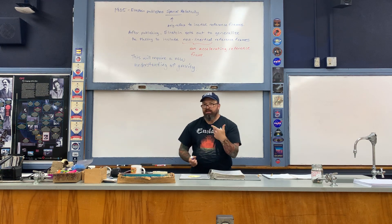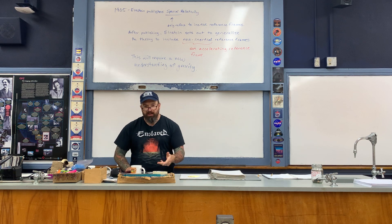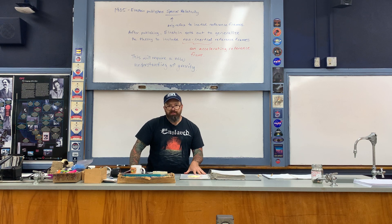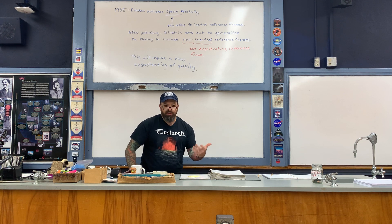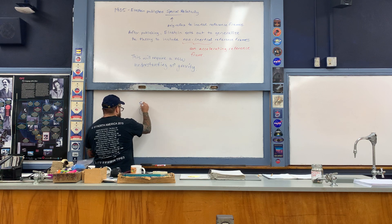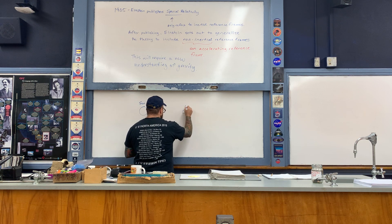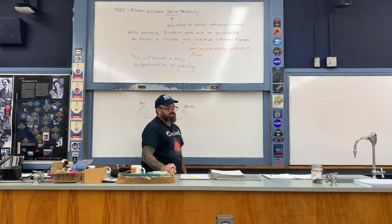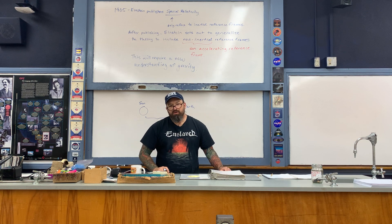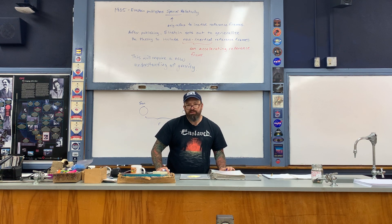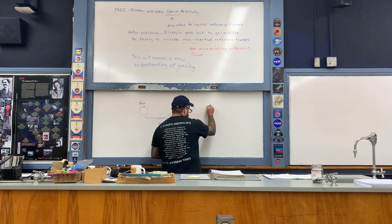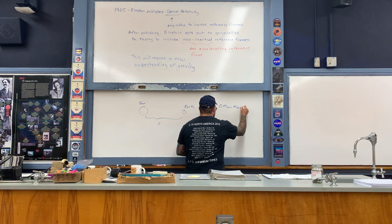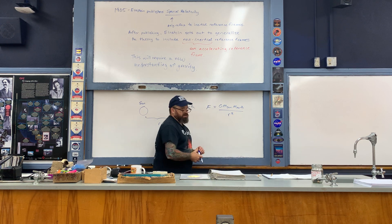Here's a conceptual example to understand why. Consider the sun and the earth, separated by a distance r, each with a mass. According to Newtonian gravitation, the magnitude of the force that the sun exerts upon the earth is: G times the mass of the sun times the mass of the earth divided by distance squared.